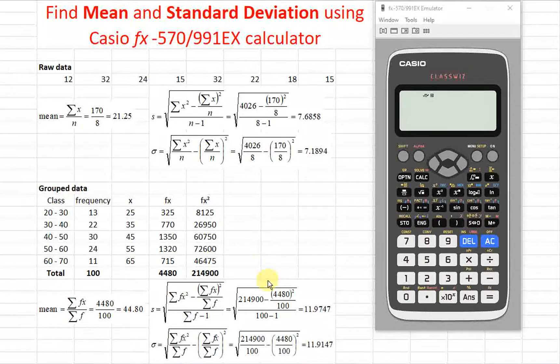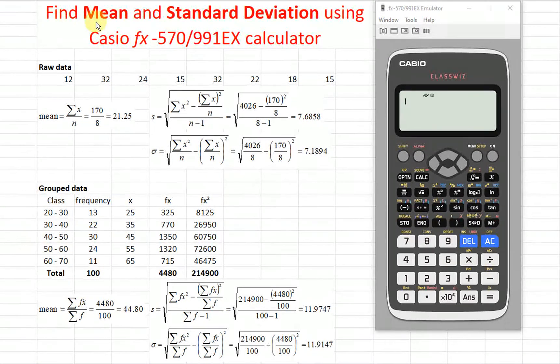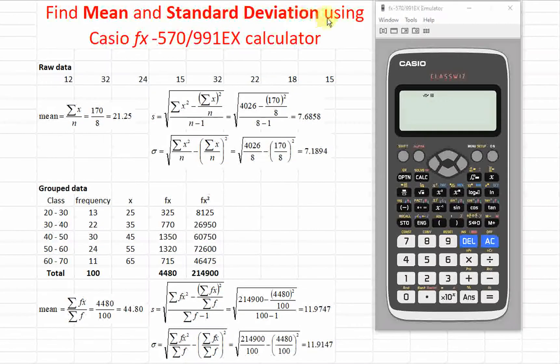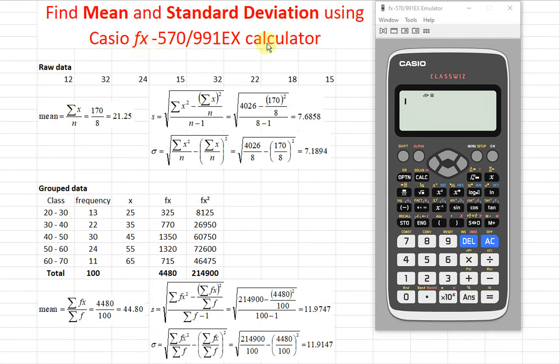Hi, this is Asim. Today I'd like to share how to find the mean and the standard deviation using Casio calculator. So this is given raw data, so we just input all the values.